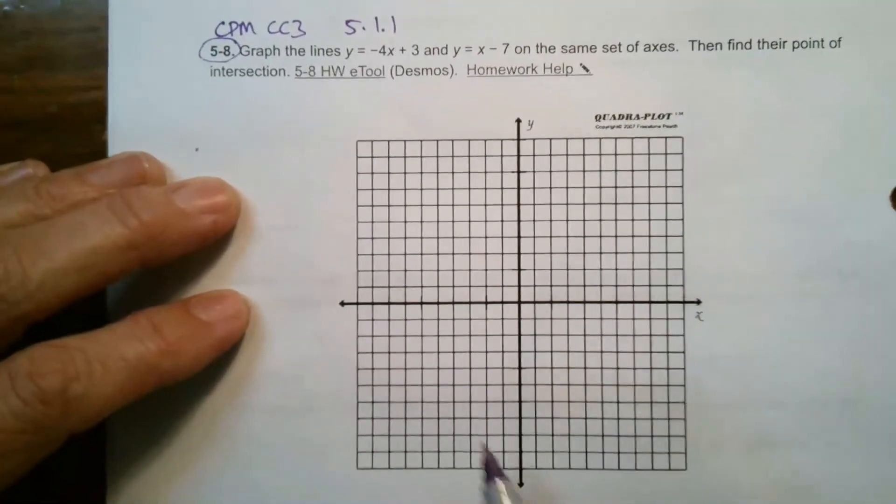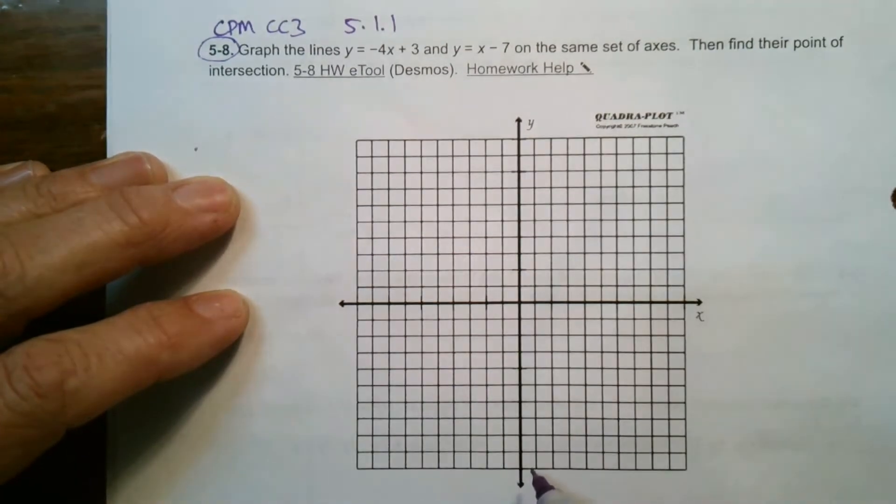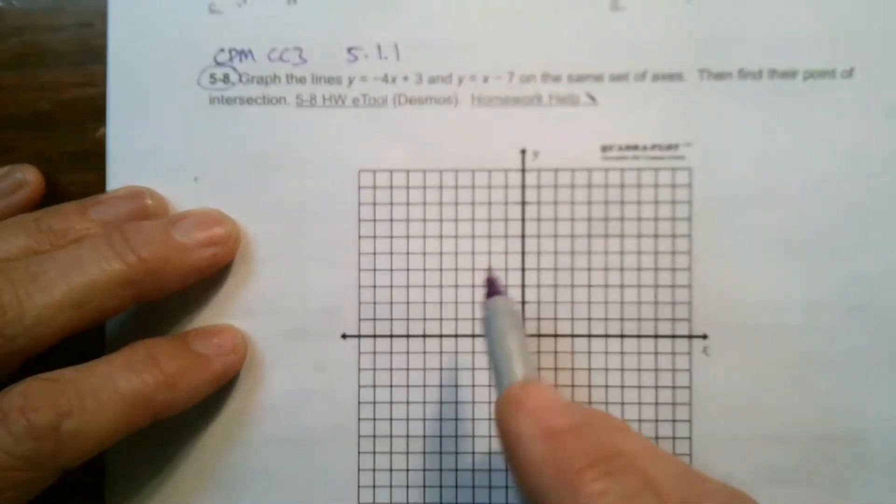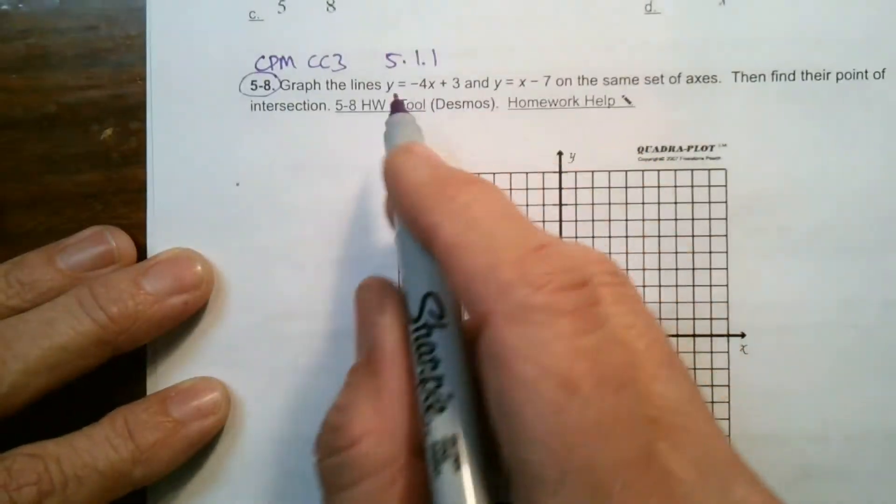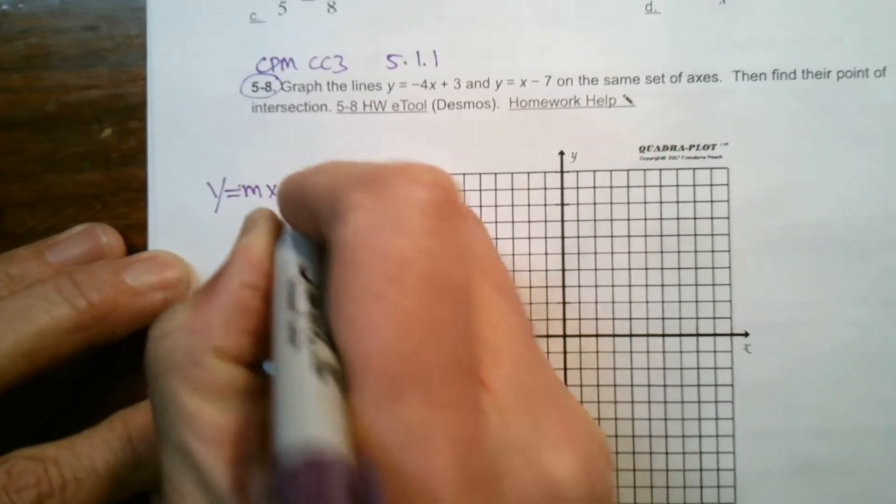So, I've got here already my axis set up. My x-axis is the horizontal axis. My vertical axis is the y. So, I'm going to graph each of these lines. Keep in mind, these lines are already in the form y equals mx plus b. That's a good form for us to be able to graph those lines to show all the solutions.